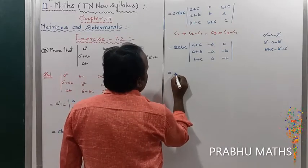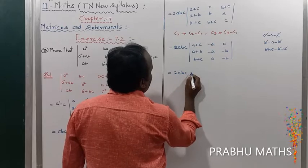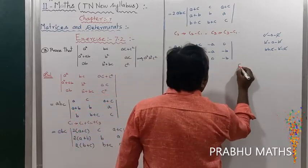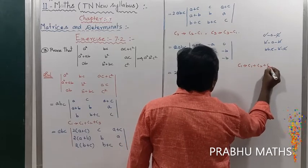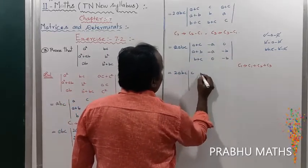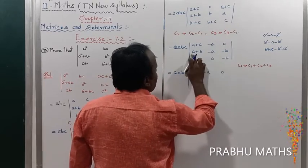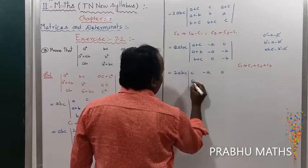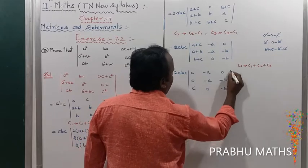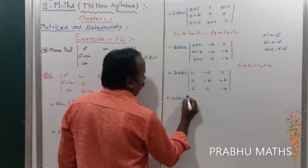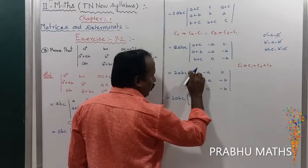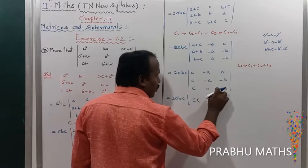So that is equal to 2 times of ABC. Now apply the next rule: C1 → C1 plus C2 plus C3. The values: minus C, minus A, then zero. A and A cancel, B and B cancel. So we get minus A, minus B, and C remaining. Now apply the rule to find the determinant value — expand along the column, closing the entire row.